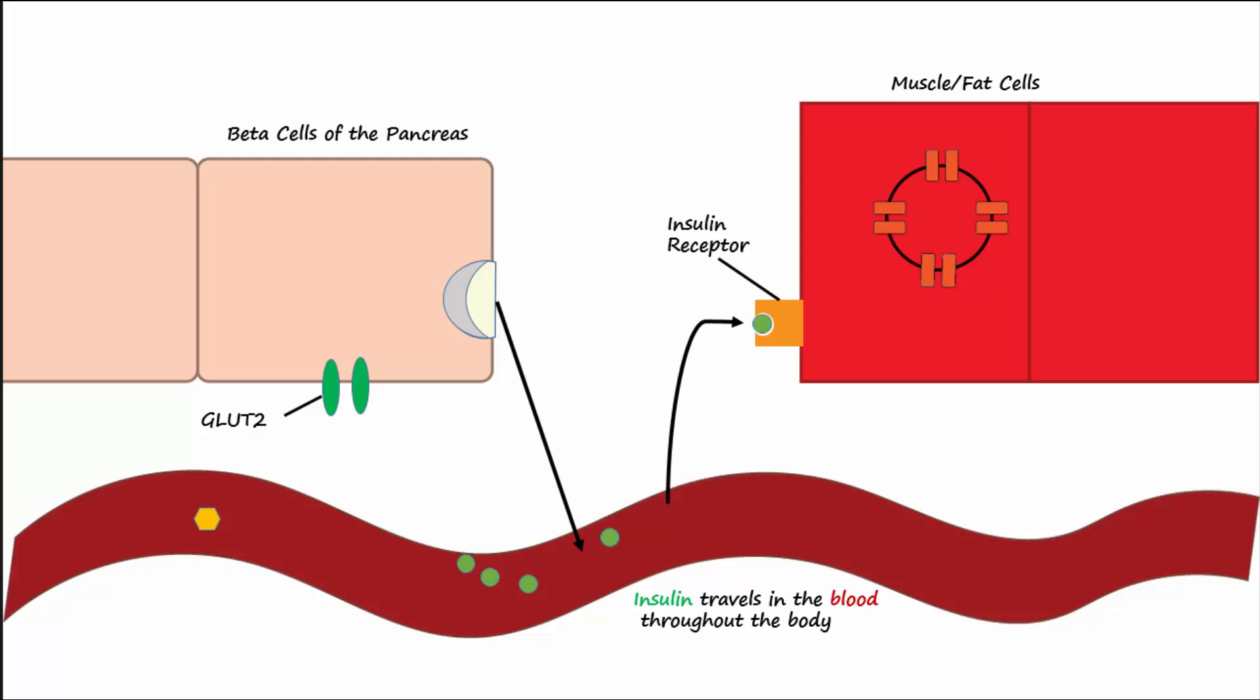This ultimately causes translocation of the glucose transporter GLUT4 into the cell membrane. GLUT4 allows glucose to leave the blood to enter the muscle and fat cells, so the glucose can be converted to fat, stored as glycogen, or be utilized to make ATP. You can see how insulin lowers blood levels of glucose since it allows it to enter into the cells.